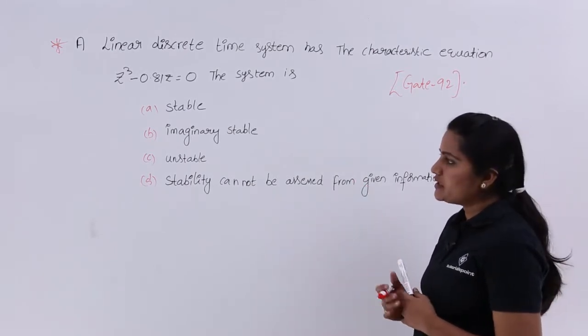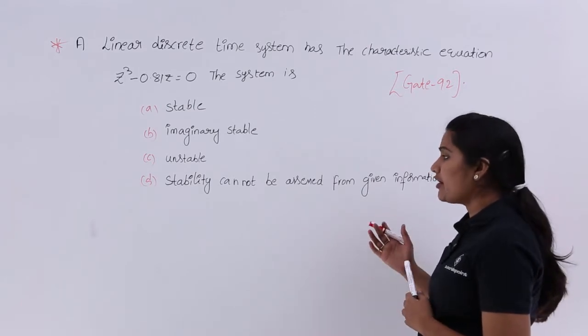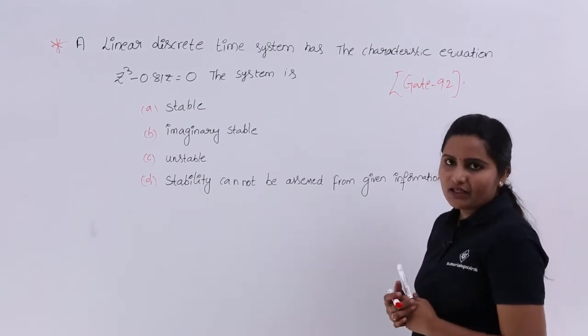The system is: stable, imaginary stable, unstable, or stability cannot be satisfied from given information.